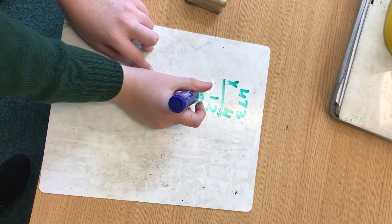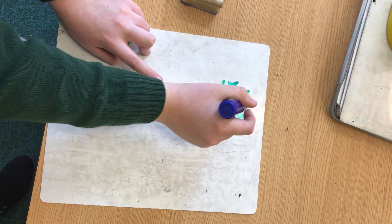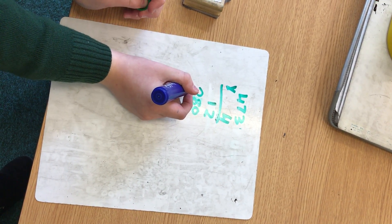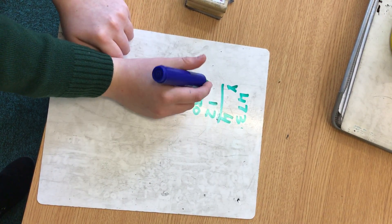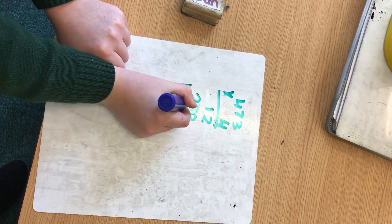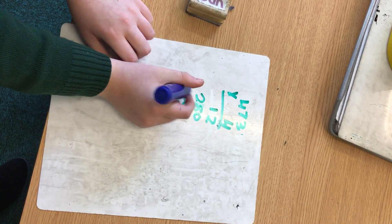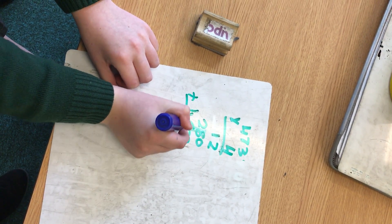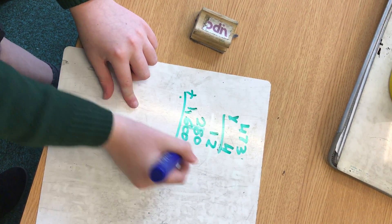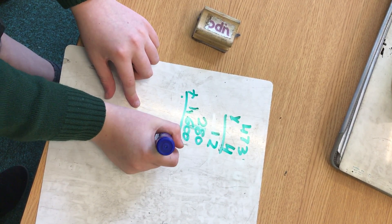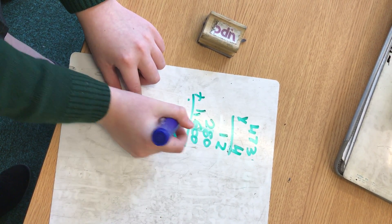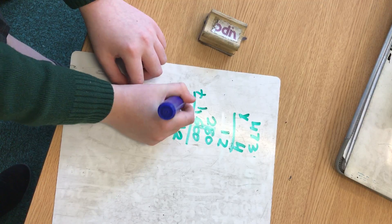Then you need to do four times four, then times it by a hundred, which would equal one thousand six hundred. Then we need to add them all together, and that would equal two hundred and ninety-eight and a thousand.